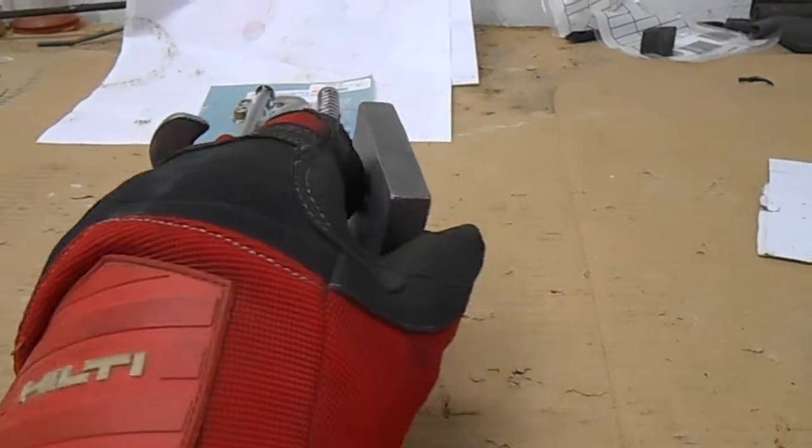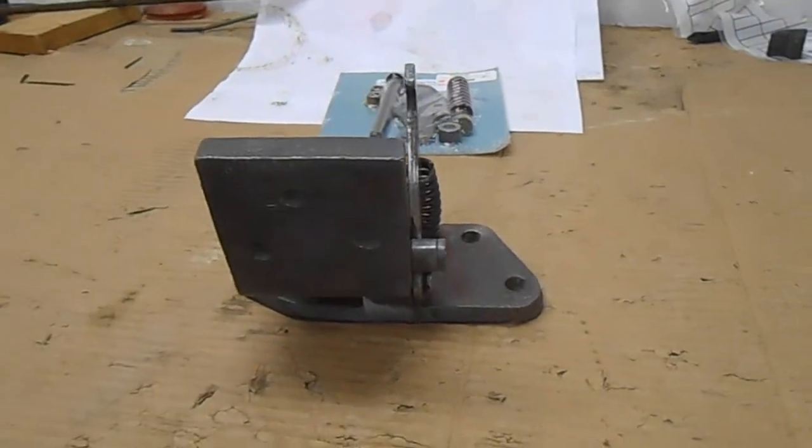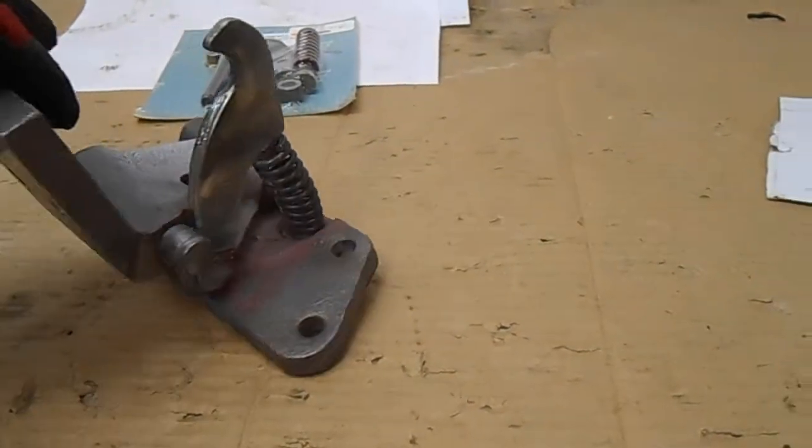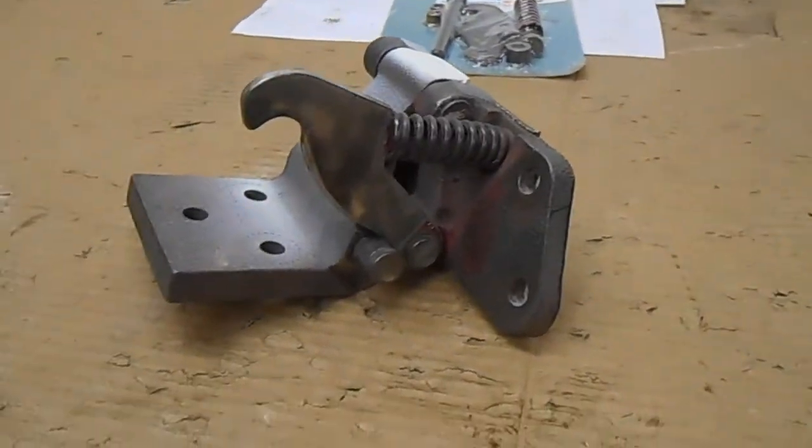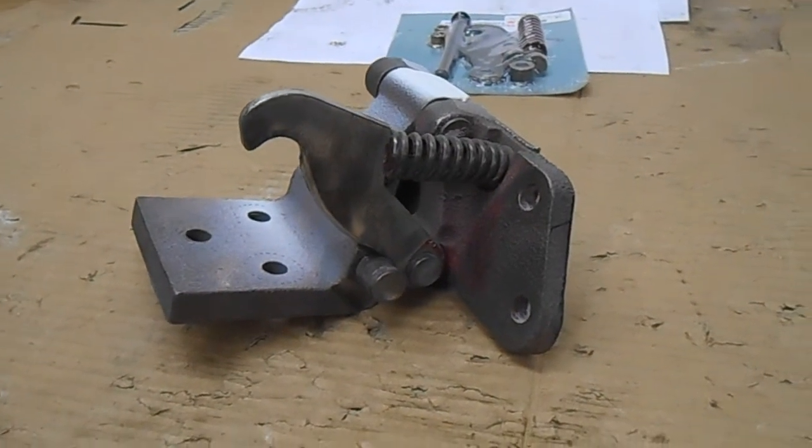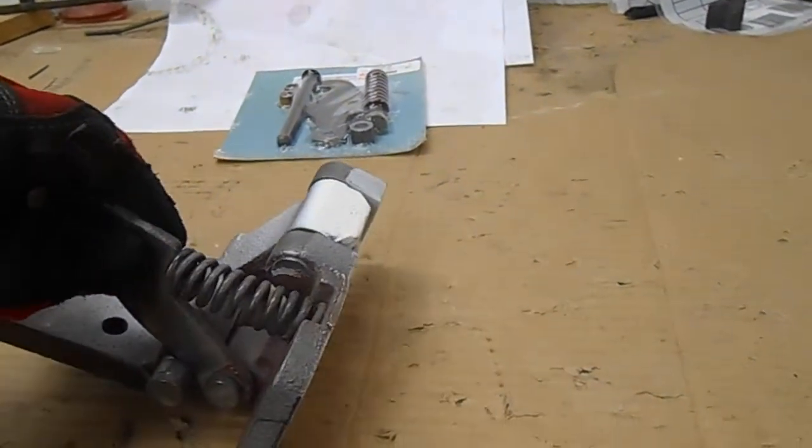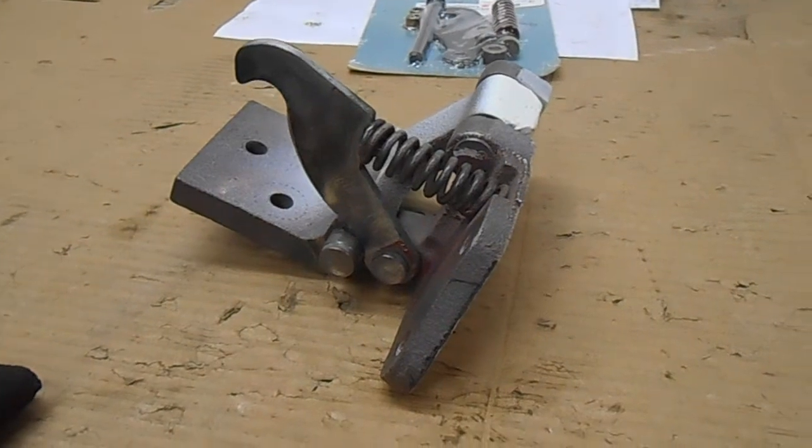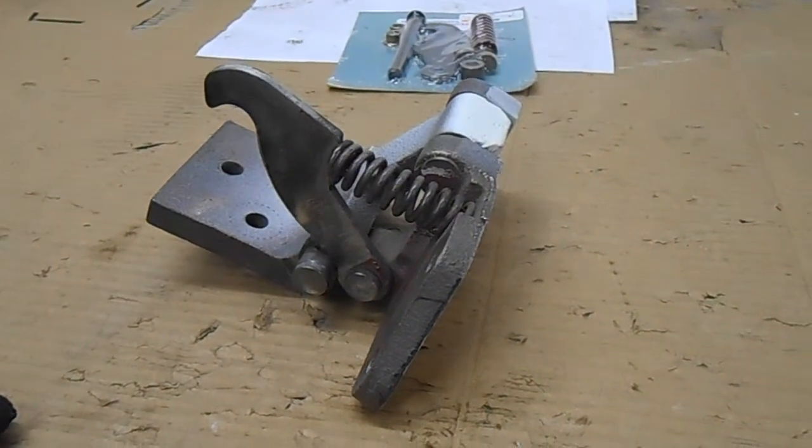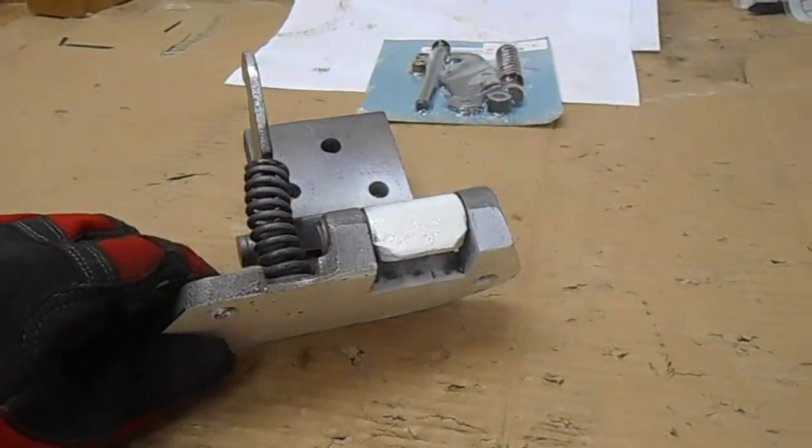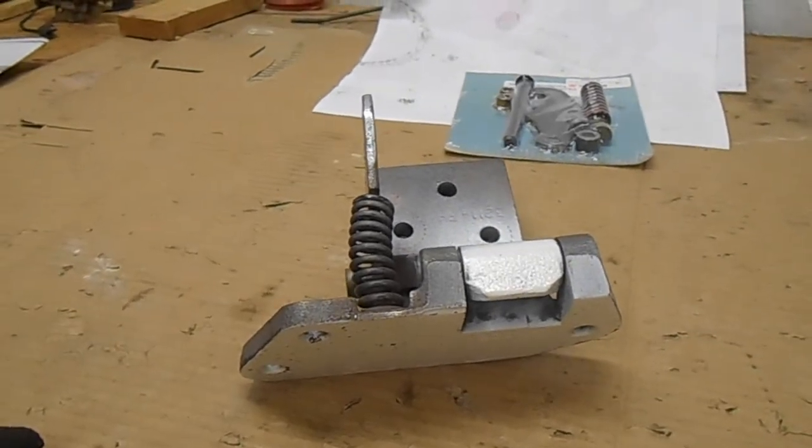This one came from a car that was built early in the 1967 model year. Everything I have found on the internet seems to say that they switched from this cast steel piece to a stamped steel hinge sometime during the 67 production year.